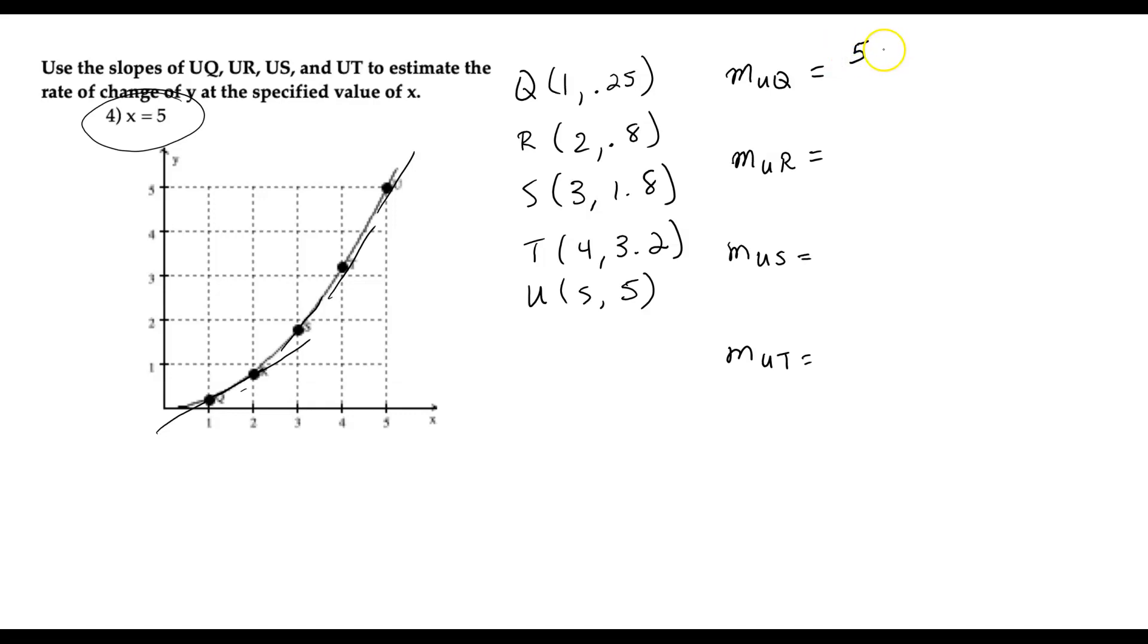U will always be 5, 5, so the y value is 5, and UQ is 5 minus 0.25 divided by 5 minus 1. Now if you've got a calculator, you're going to get something like this, 4.75 divided by 4, and that is about 1.1875.